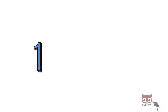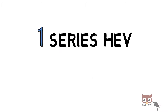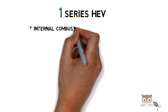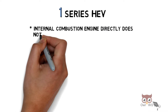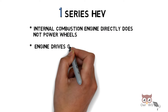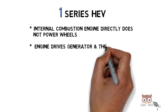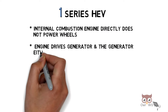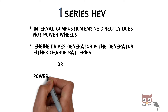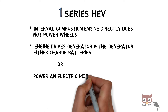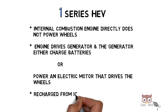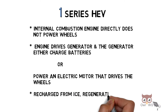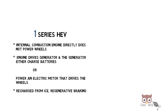First, series HEV. Here the internal combustion engine directly does not power the wheels. The engine drives a generator, and the generator either recharges the batteries or powers an electric motor that drives the wheels. They can be recharged from the ICE as well as regenerative braking.